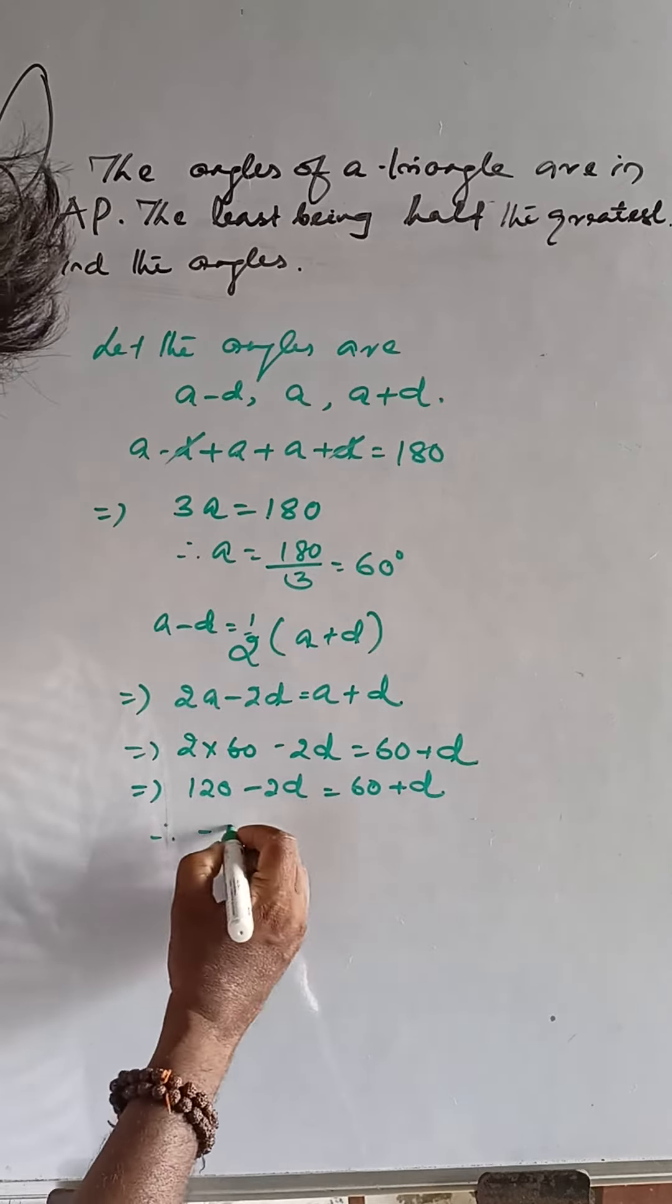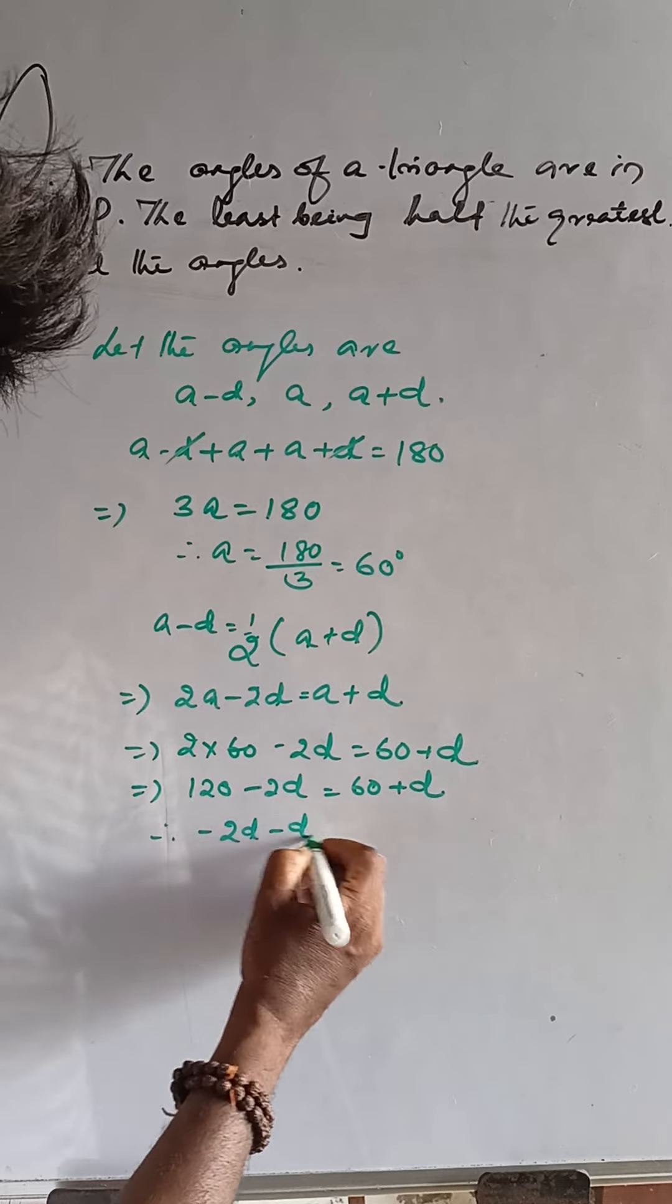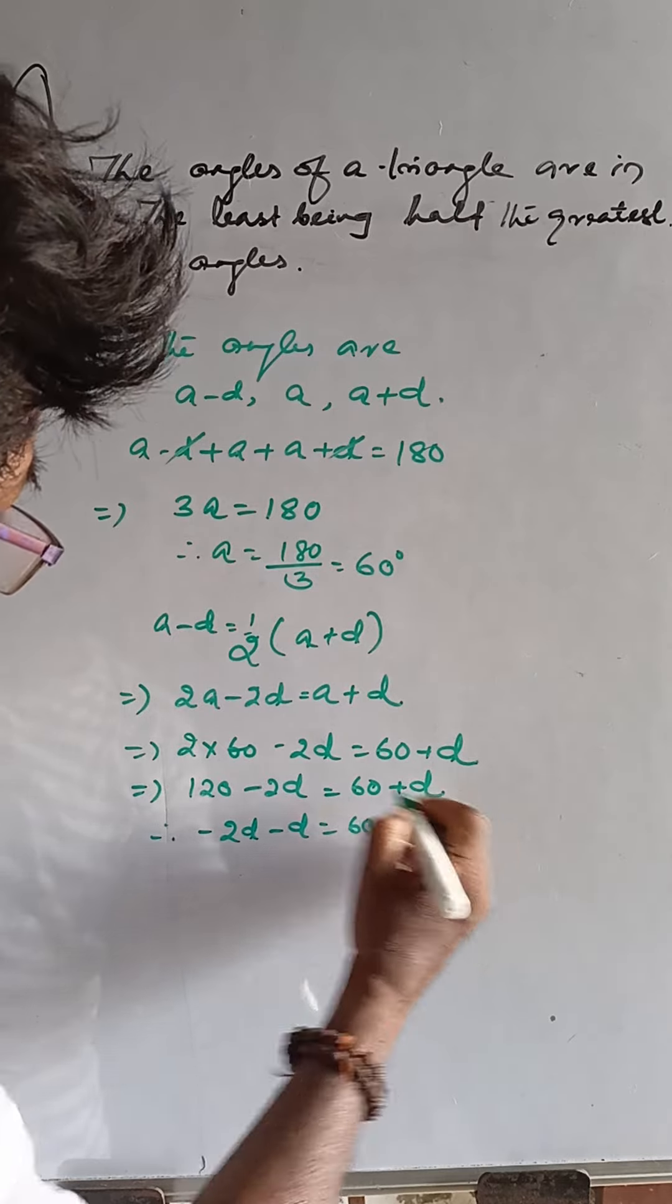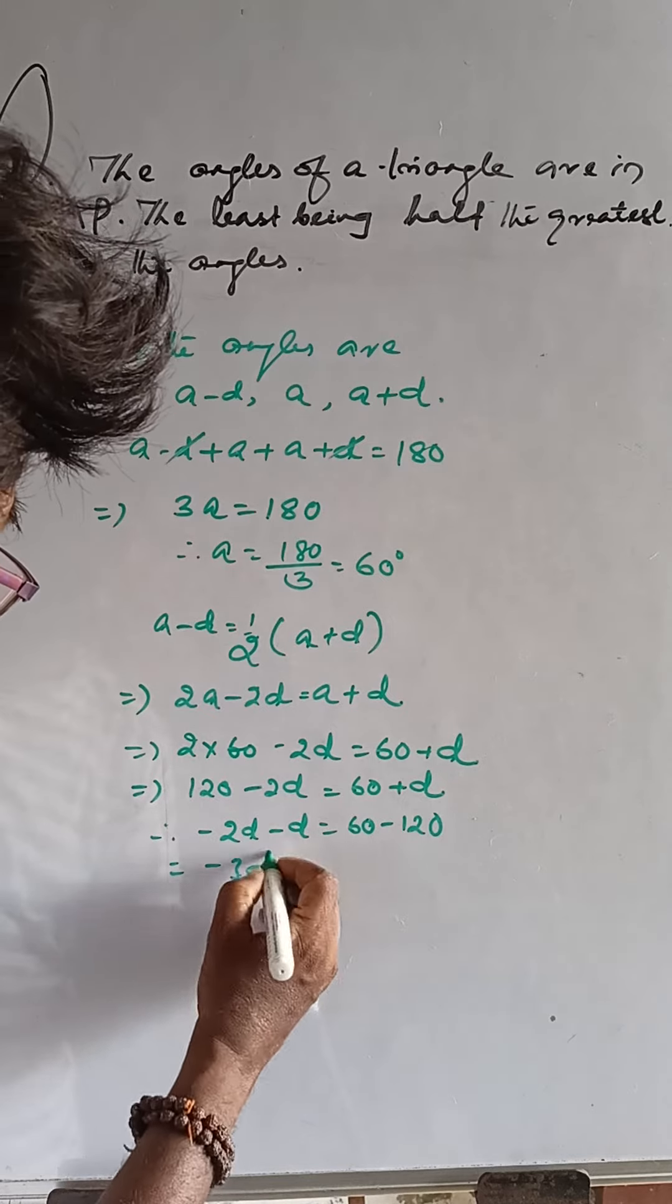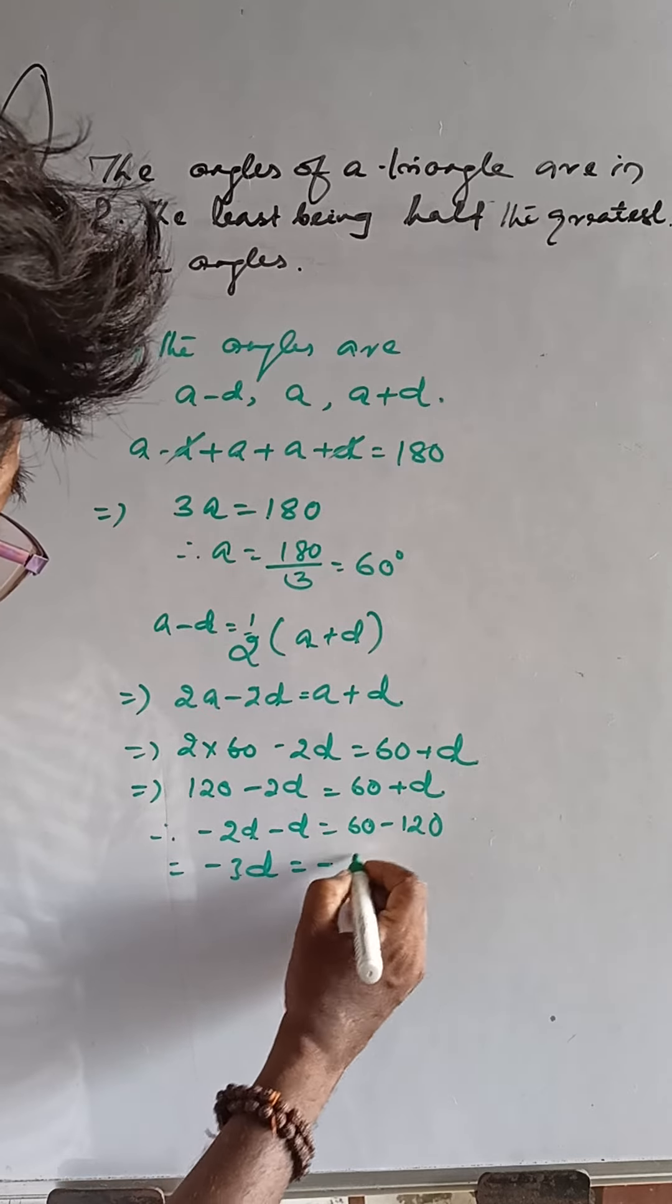Then, this is minus 2D minus D, 60 minus 120, so minus 3D is equal to minus 60.